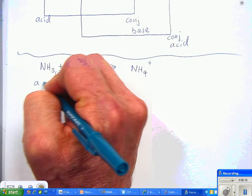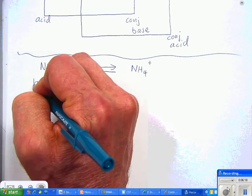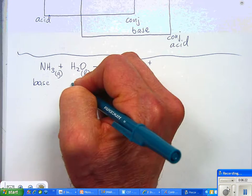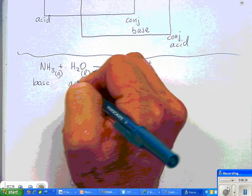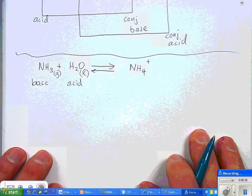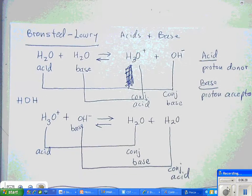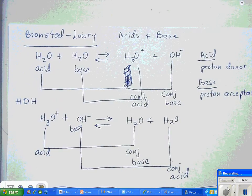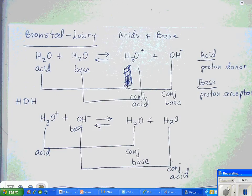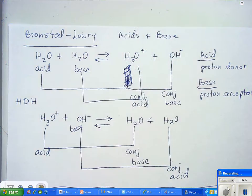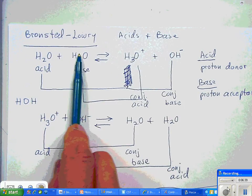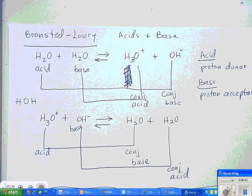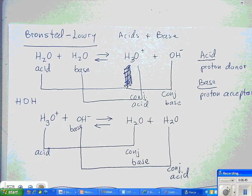see, now this guy became a base, B-A-S-E. And now this dude, the water, is the acid. As we saw before in the last equation, water is both an acid and a base depending on which way he goes, which way the molecule goes. And when we have this situation where something can be an acid or a base, we call that amphoteric, A-M-P-H-O-T-E-R-I-C.